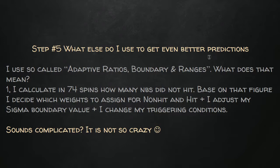I'm also using something I call adaptive ratios boundary ranges. I calculate how many numbers did not hit in 74 spins, then adjust my ratios based on that. Sometimes only one or two numbers didn't hit; sometimes seven or eight numbers didn't hit in 74 spins. Based on that, I adjust whether non-hit or hit frequency is more important in calculating the ratios. If mostly all numbers hit in 74 spins, hitting frequency is probably more important.